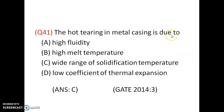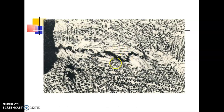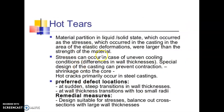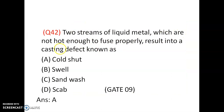Hot tears in metal casting are due to a wide range of solidification temperature — option C is correct. Hot tears are cracks that appear on the metal surface due to stresses from differential solidification temperature. If two streams of liquid metal are not fused properly, the cold shed defect will occur.